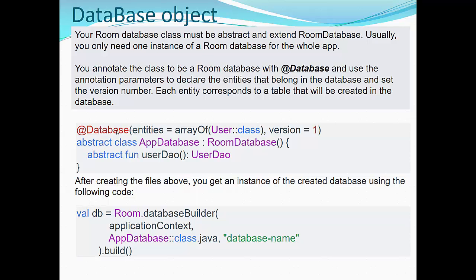As it was said above, we have to extend RoomDatabase class and have a method that returns userDao object. You remember the userDao object has all methods for how to access database, how to operate with entities in database. After creating the files above, you get an instance of the created database using the following code: create your DB file that will be a result of executing room.databaseBuilder for the current context, for the app database class with the particular database name that you have selected.